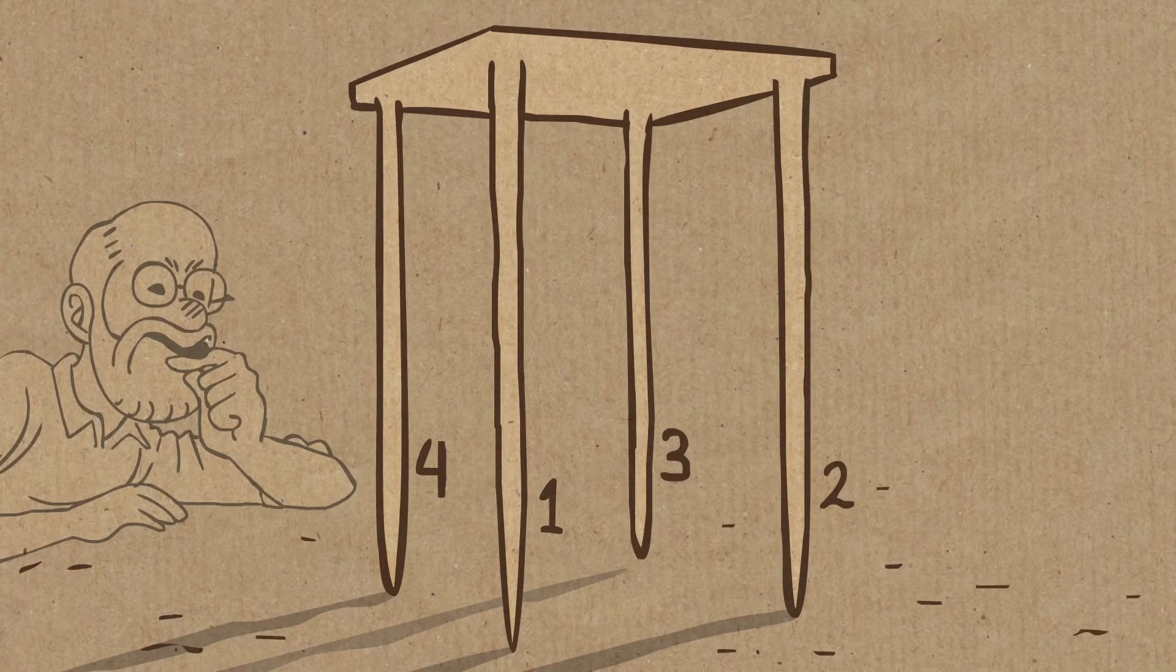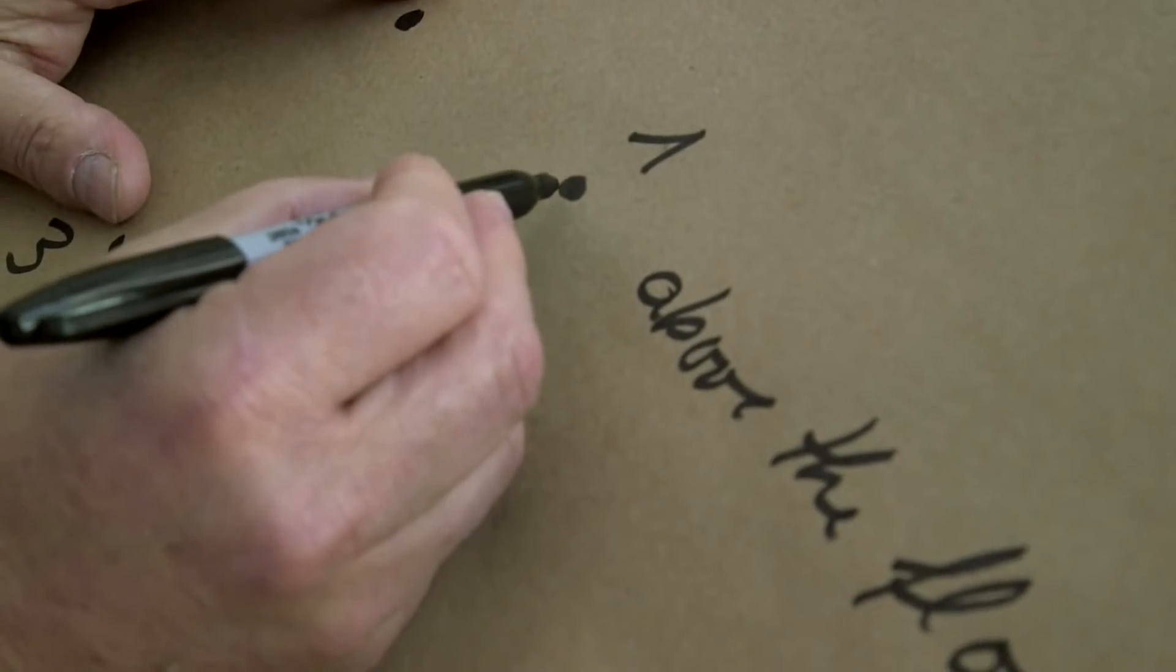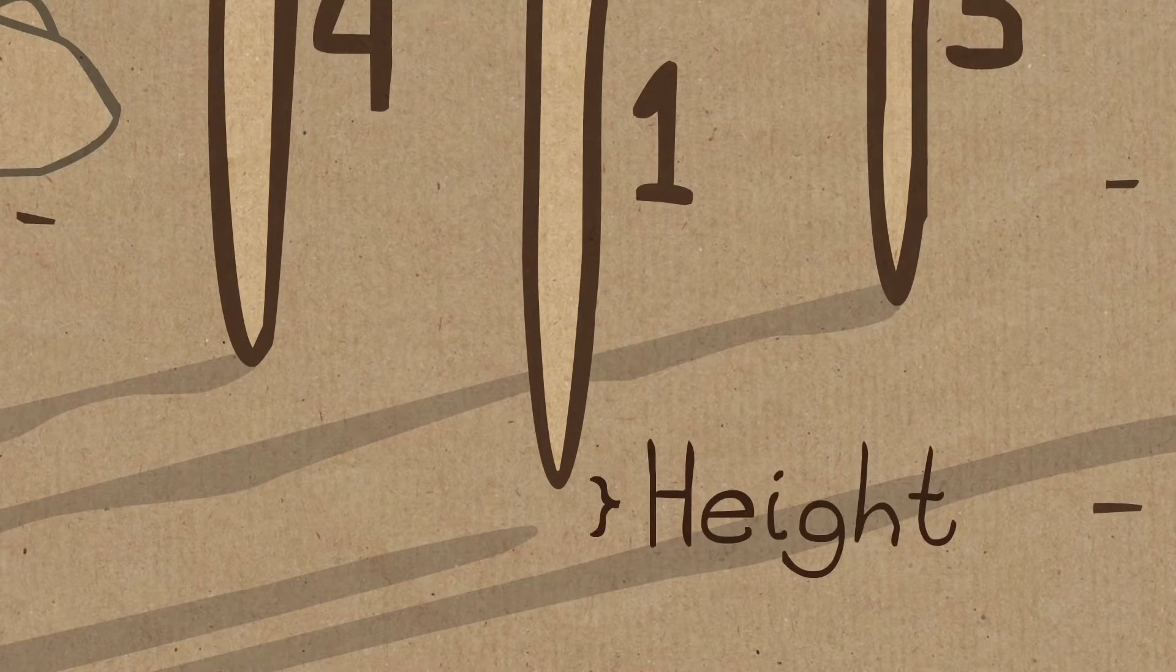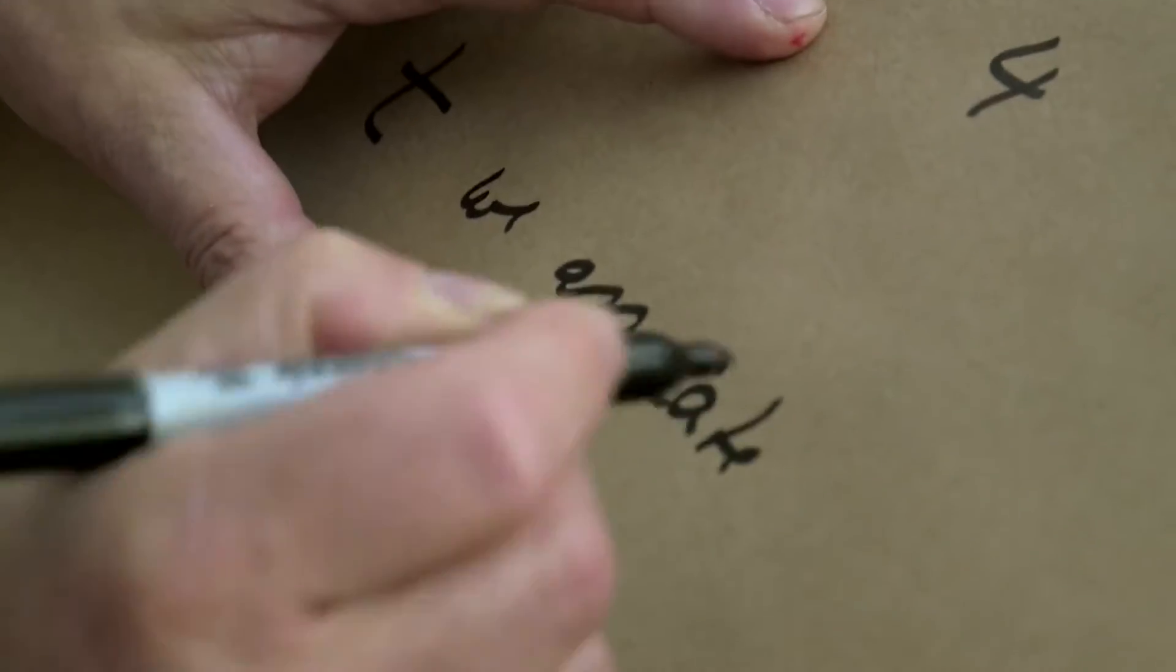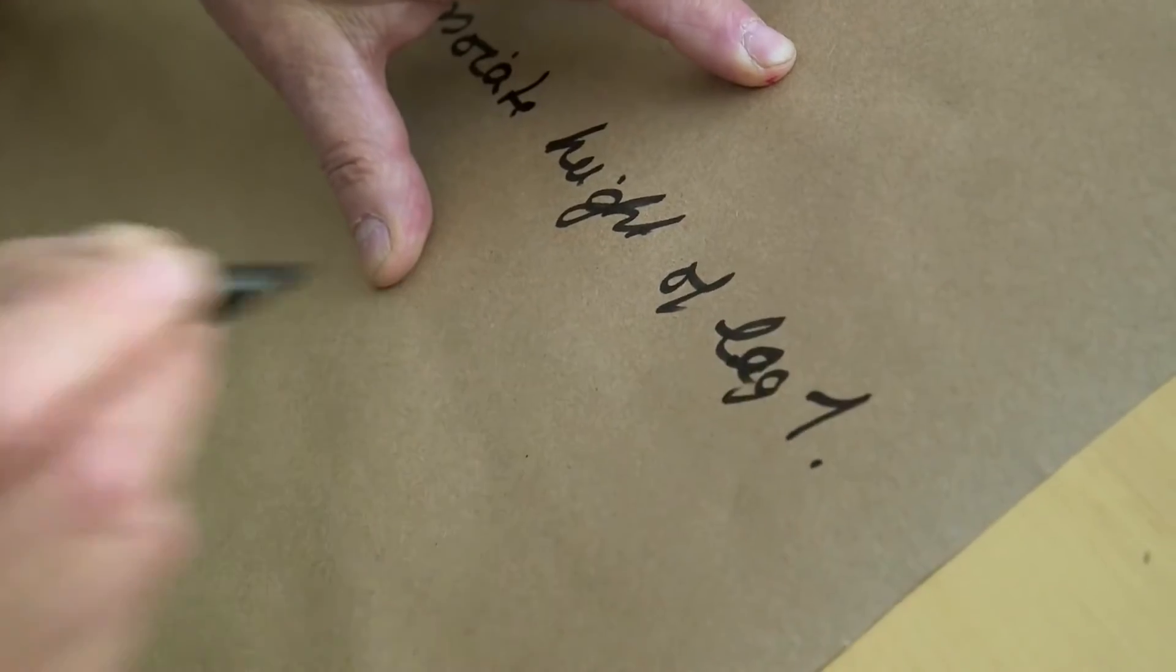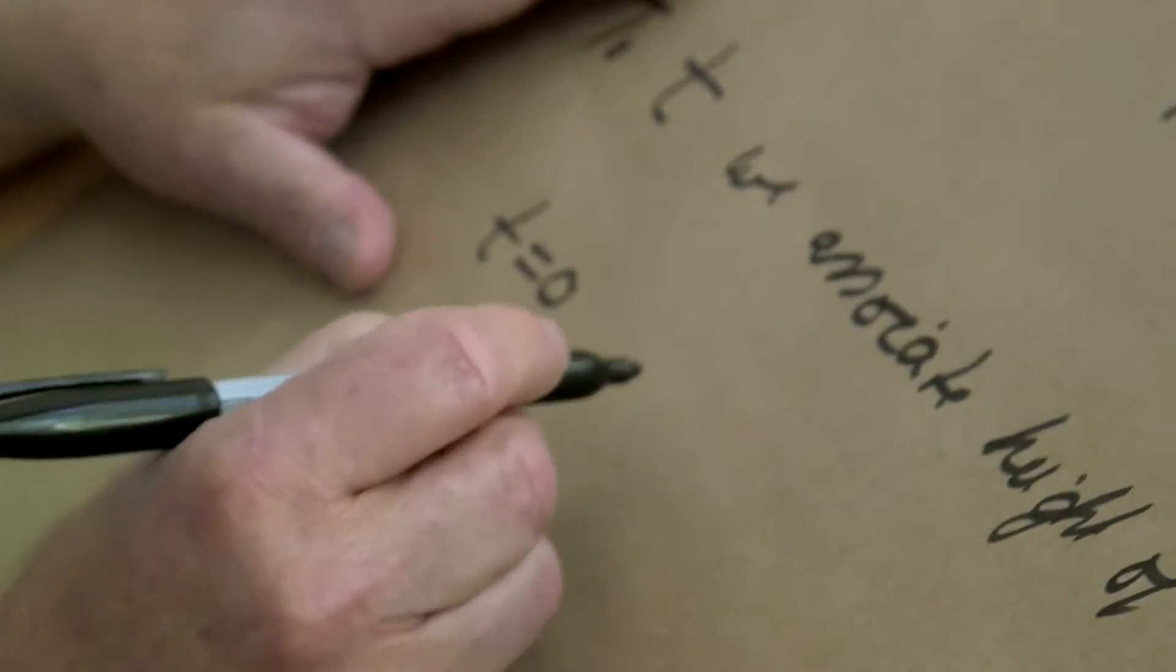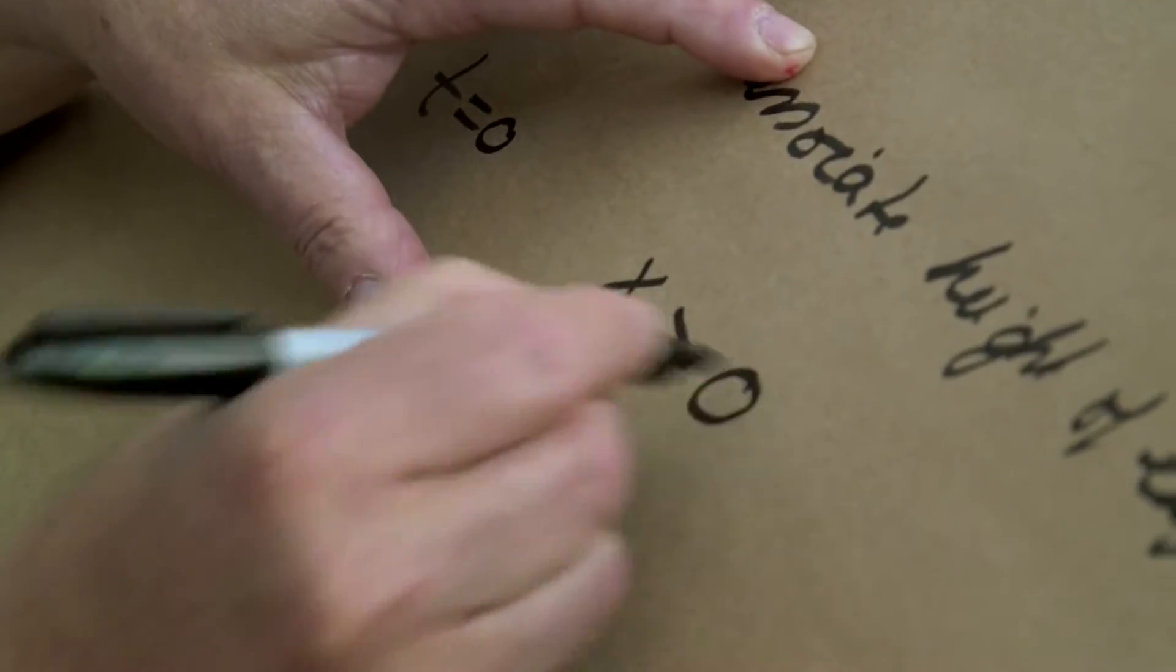And now we do the following, we measure the height of leg one. We always measure the height of leg one. So if we do that in time then we get associated to time t, we associate height of leg one. So at time zero we get some number, t equals zero, we get some number say x larger than zero. Now this was, nothing has happened.